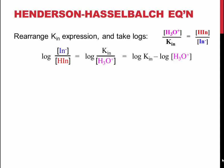By rearranging the k-in expression and taking the log of both sides, we can transform the expression into the Henderson-Hasselbalch equation. Remember that with logarithms, division is equal to subtraction of the two terms. Because the pH is equal to the negative log of the concentration of hydronium, and the pKin is equal to the negative log of kin, these terms can be substituted into the expression as well.